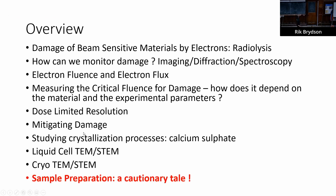I'm going to tell you about damaging beam-sensitive materials, how we can monitor that damage, and how we need to relate that to the number of electrons per unit area — the fluence — and also the flux, the number of electrons per unit time. I'll show how we can measure critical fluences before the material falls apart, and how that limits the resolution we can achieve in imaging or spectroscopy. Then I'll cover how we can avoid damage, and I'll finish on a cautionary tale about sample preparation — how you can prepare it five different ways and get five different results.